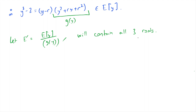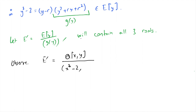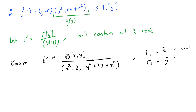Once I have a quadratic and I add one root, it will split into two linear factors in E'. That means I also have the second root inside E', so this field will contain all three roots. Let's understand what the third root is in terms of the other two. Since two roots generate E', the third root must be expressible in terms of those first two. Observe that E' is isomorphic to the quotient of Q[x, y] modulo x cubed minus 2 and y squared plus x·y plus x squared.